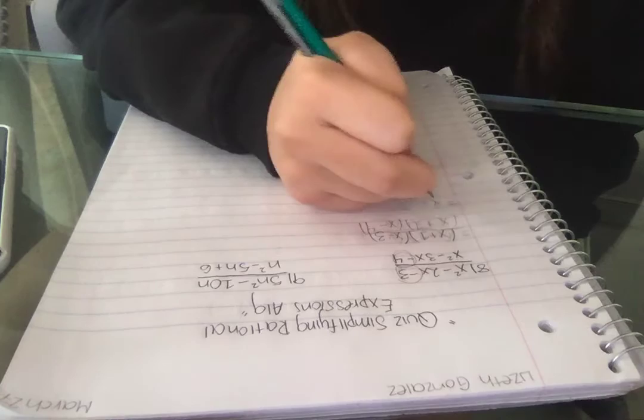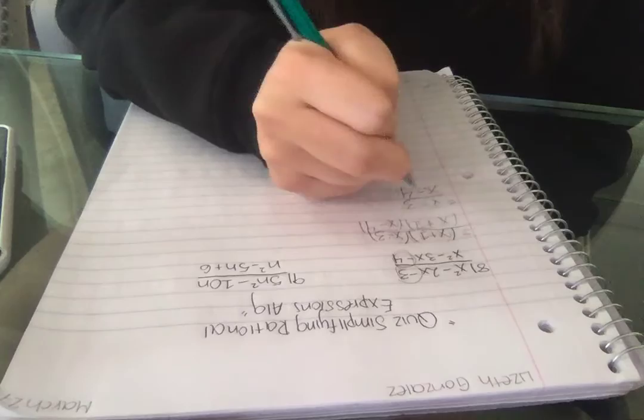Now we can have our final answer which will be x minus 3 and x minus 4, and that is our final answer.